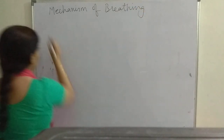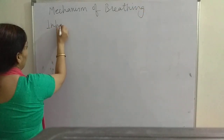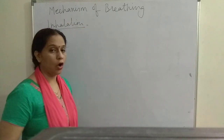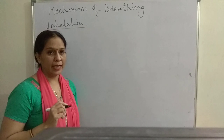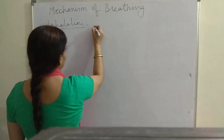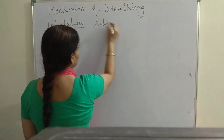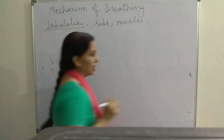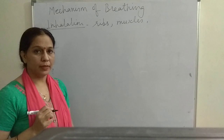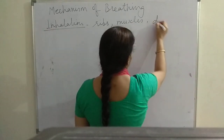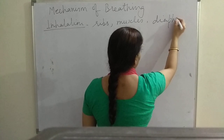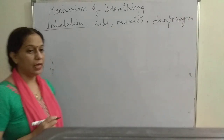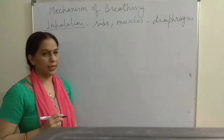So first we will see how is inhalation carried out. Whether it is inhalation or exhalation, it is a combined action of three structures. Those three structures are: ribs and the muscles present between ribs — they are called internal intercostal muscles and external intercostal muscles — and the diaphragm. These three structures have their combined action towards inhalation and exhalation.